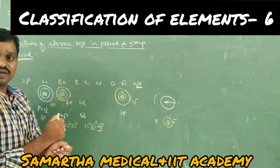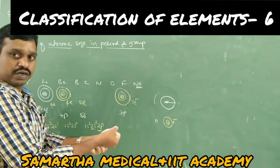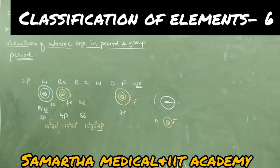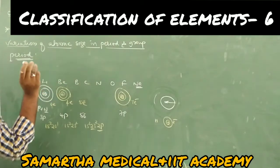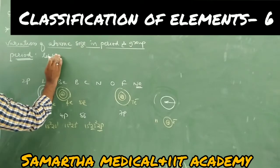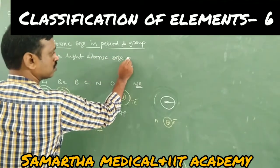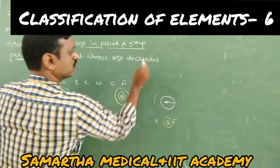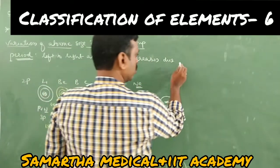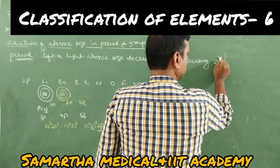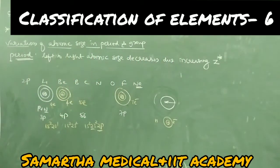But the nucleus power is increasing much more. The nucleus has heavily massed particles, so it attracts electrons towards its side strongly. Therefore, atomic size decreases. Write the statement: in a period, left to right, atomic size decreases due to increasing Z star — effective nuclear charge.